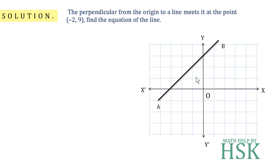is the line AB in the second quadrant. So perpendicular from the origin to the line meets at a point (-2, 9). So just to represent the given condition, I draw the perpendicular from origin to the given line and I say that it meets at the point which has a coordinate (-2, 9). Now